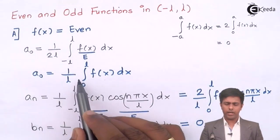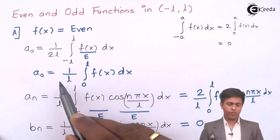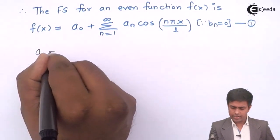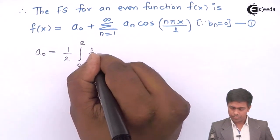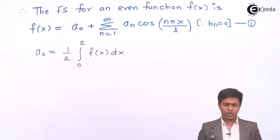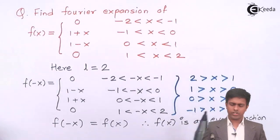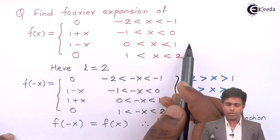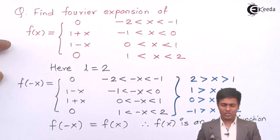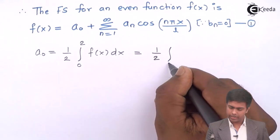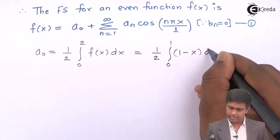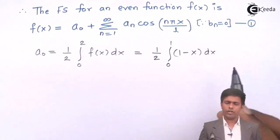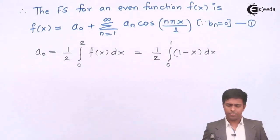The formula for a0 is (1/l)∫₀ˡ f(x) dx. With l = 2, this becomes (1/2)∫₀² f(x) dx. On [0,2] the function splits into two parts: (1-x) on [0,1] and 0 on [1,2]. Since the second part is zero, we only integrate over [0,1]: a0 = (1/2)∫₀¹ (1-x) dx.